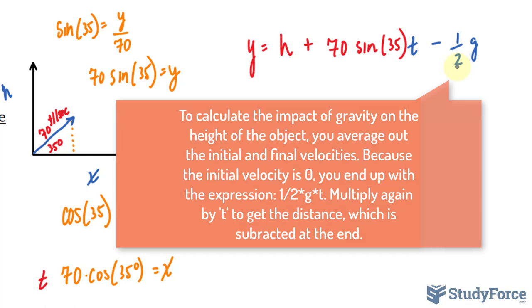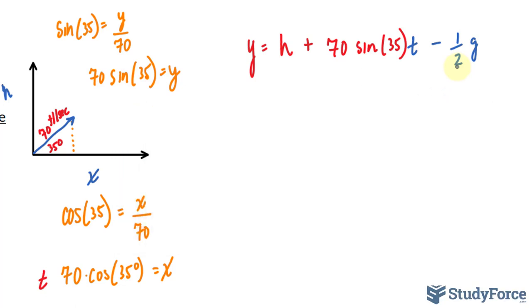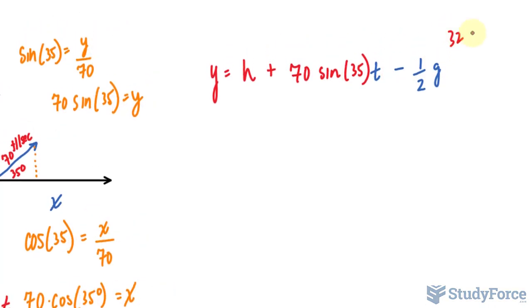Because we're using feet, I'll be using 32 feet per second squared. I'll replace g with this value, which then gets multiplied by t to the power of 2. So cleaning this up, y equals the initial height of 0, plus 70 sine 35t, where 70 was the initial velocity, minus 16, because 32 times half is 16, times t squared. That answers question B.